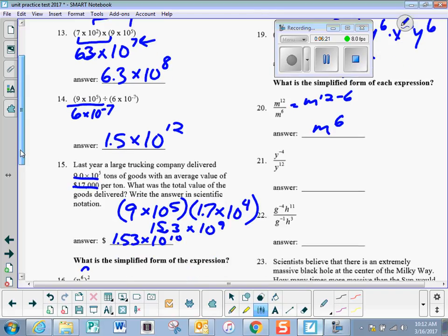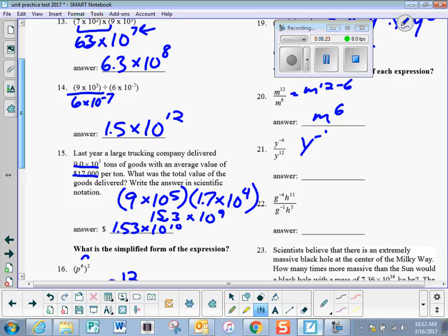Number 21, when I divide things with the same base, I subtract exponents. Negative 4 minus 12 is negative 16. To make those positive, I put it under 1.